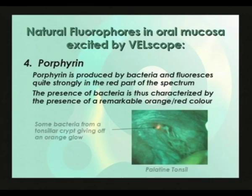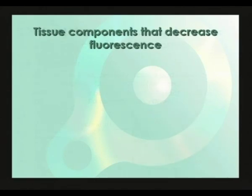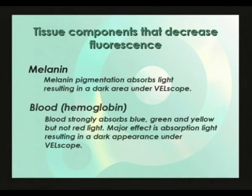Porphyrin is produced by bacteria and fluoresces quite strongly in the red part of the spectrum when excited by blue light. The presence of bacteria is thus characterized by the presence of a remarkable orange-red color, as can be seen in this image of some bacteria from a tonsillar crypt, giving off an orange glow. Both melanin and blood will increase light absorption in the tissue. Their presence will cause a marked decrease in tissue fluorescence and result in a distinct darker area in the predominantly green oral mucosal tissue fluorescence.